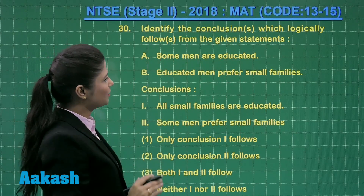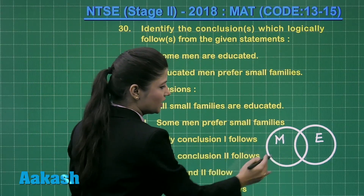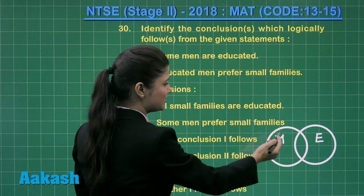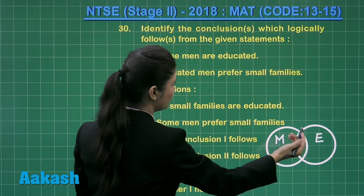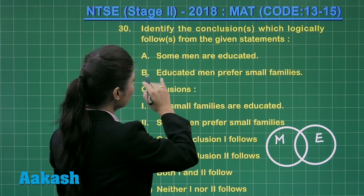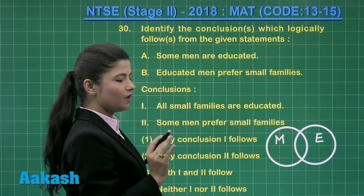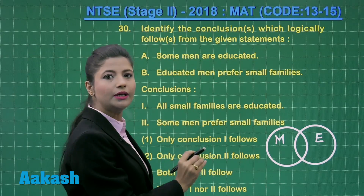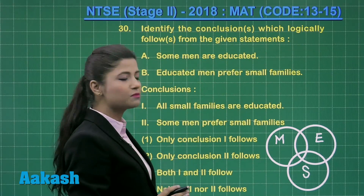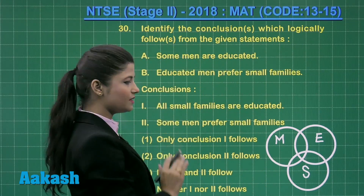According to the first statement, some men are educated. This is represented by a diagram where one circle represents men and another represents the educated population, with an overlapping region. Including the second statement — educated men prefer small families — the best possibility can be shown where educated men are fully within the small families circle.